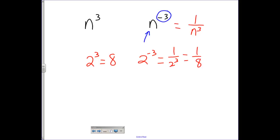So 2 to the third power is 8, but 2 to the negative third power is the reciprocal of that, which is 1 over 8. You notice how the number 1 over 8 is still positive.